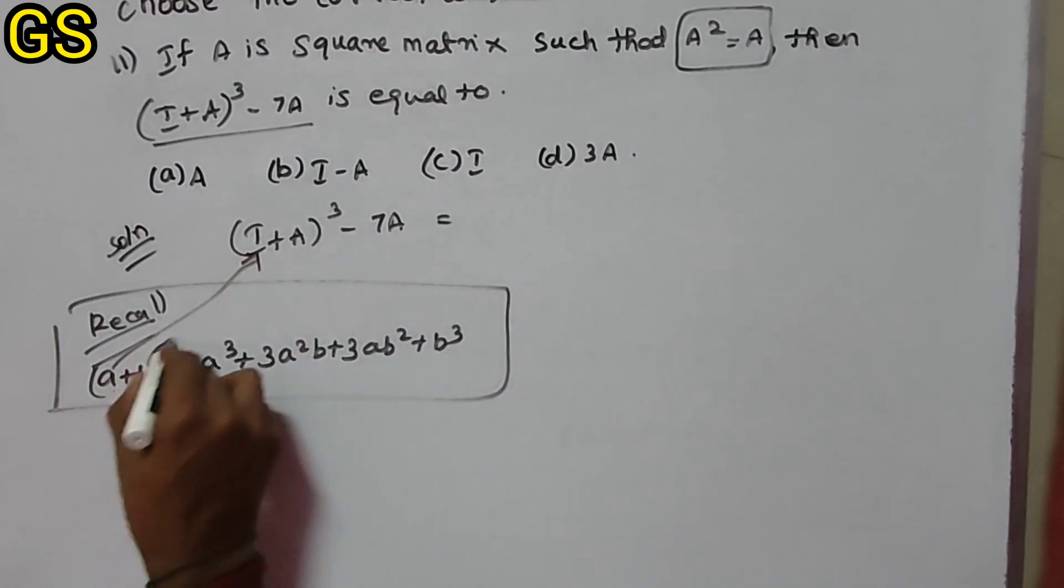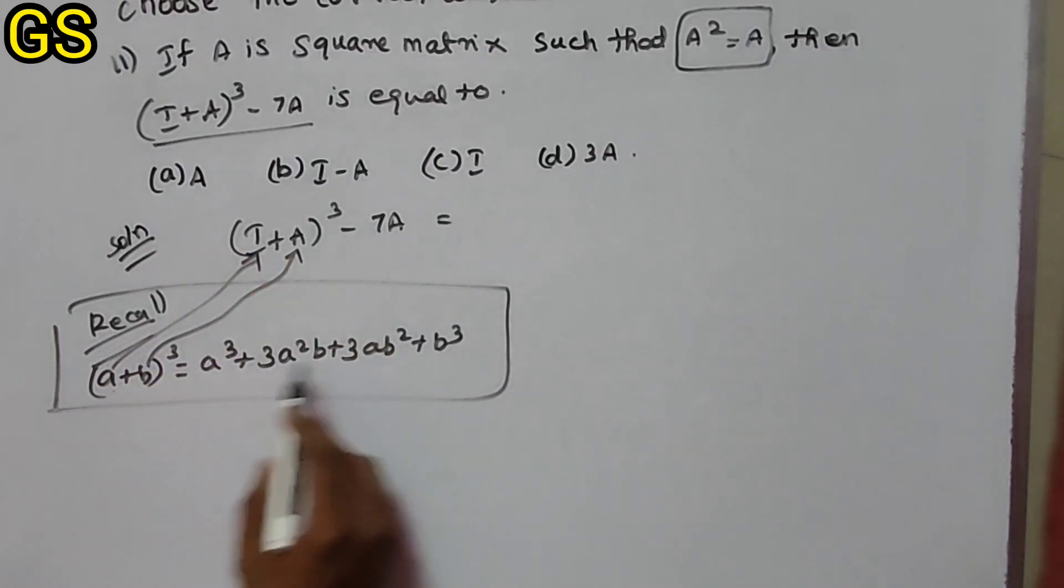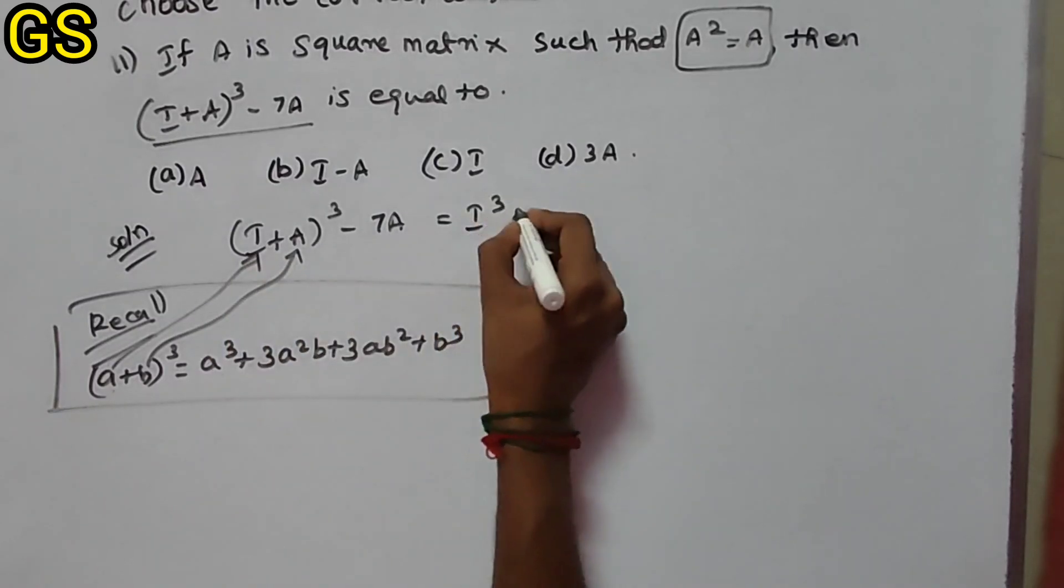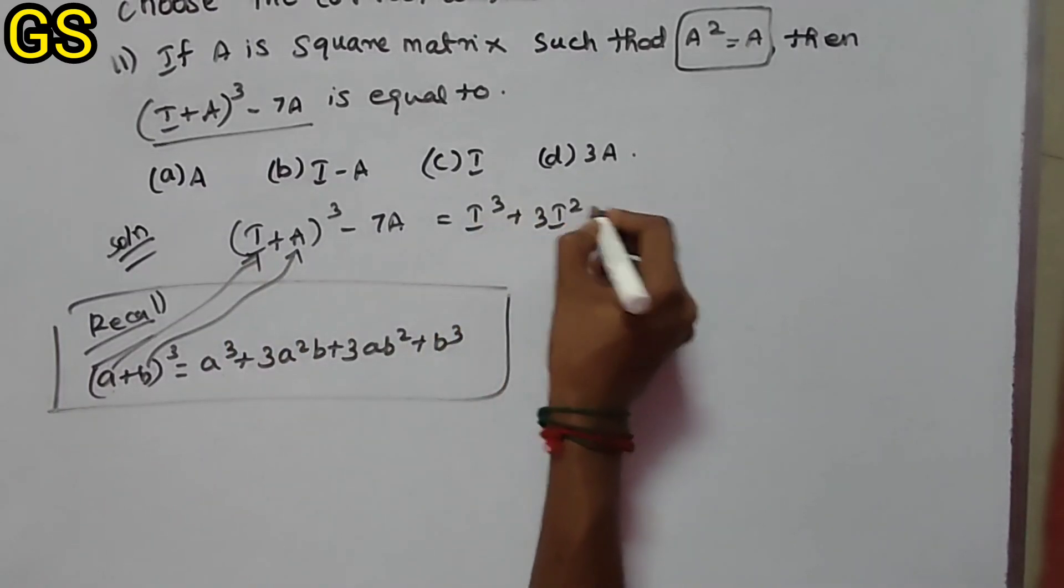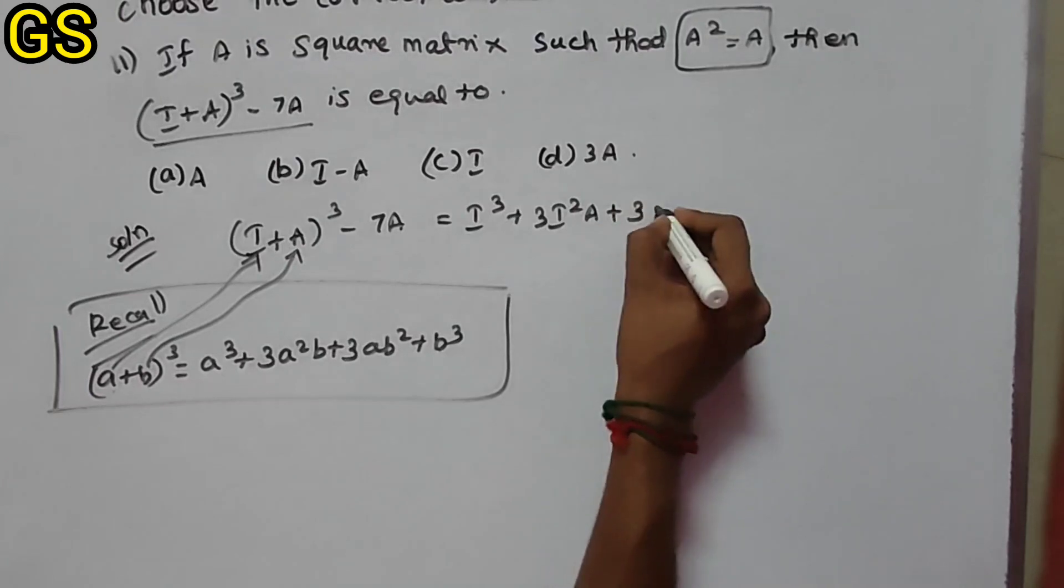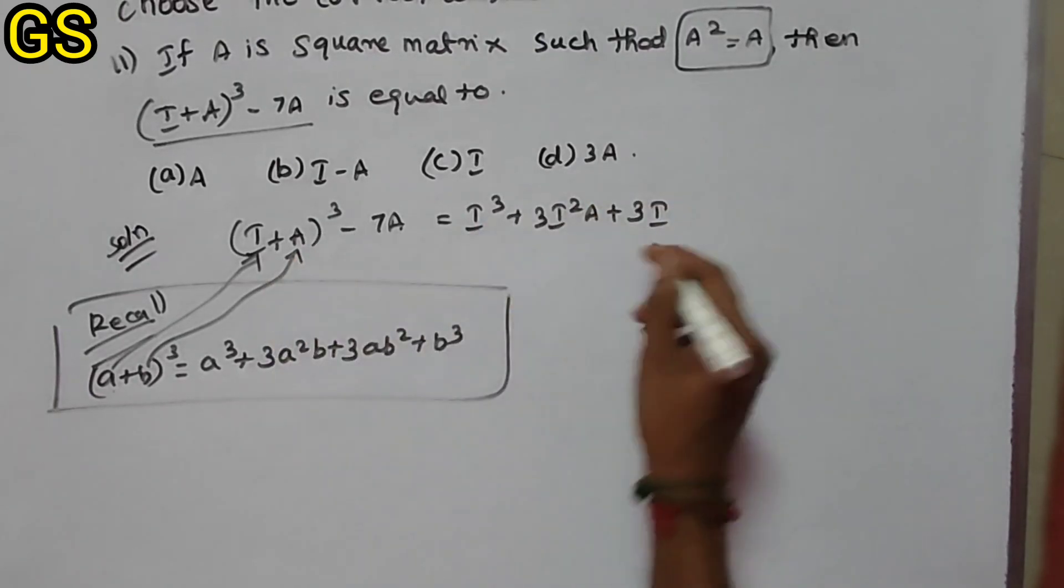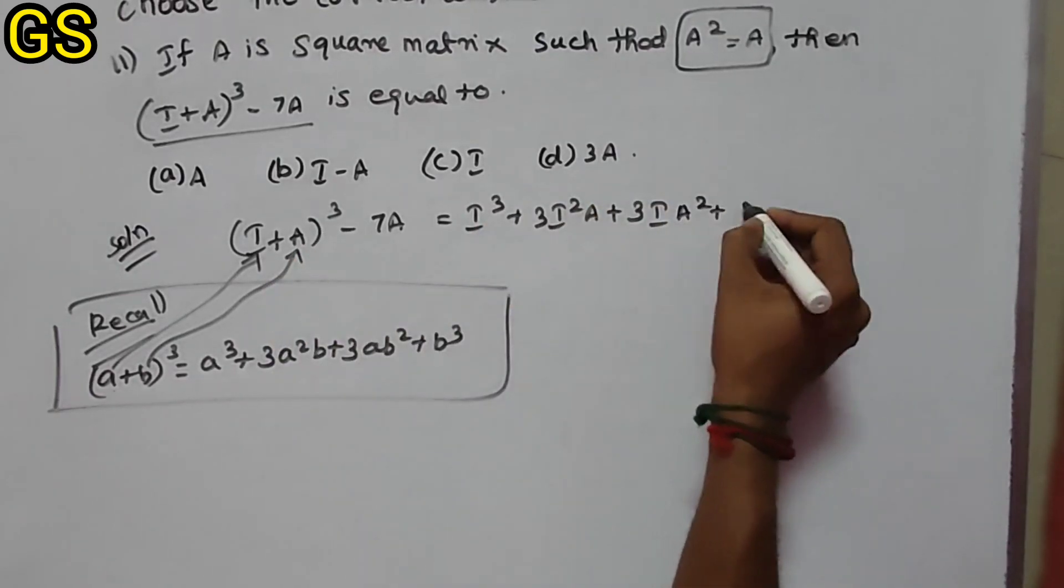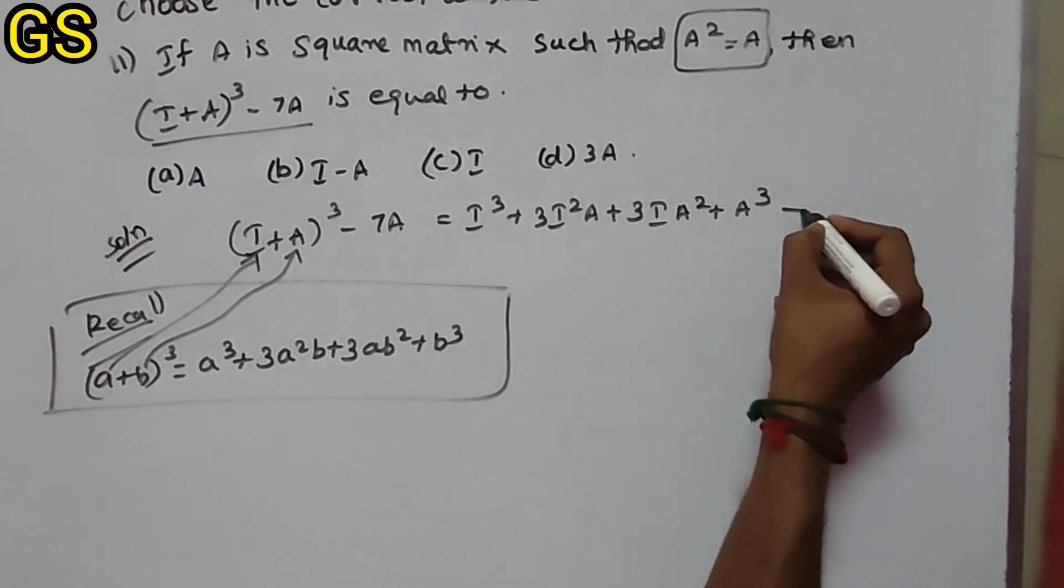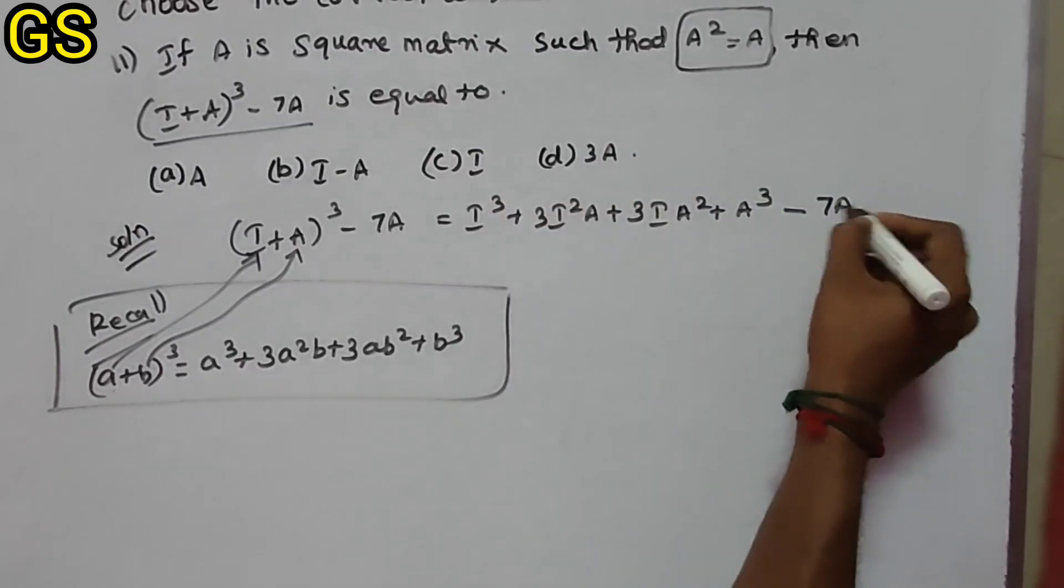So I³ + 3I²A + 3IA² + A³. Since I is the identity matrix and A² = A from the given condition, this simplifies to I + 3A + 3A² + A³ - 7A.